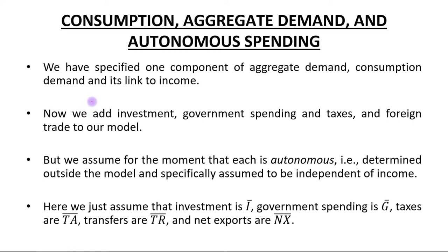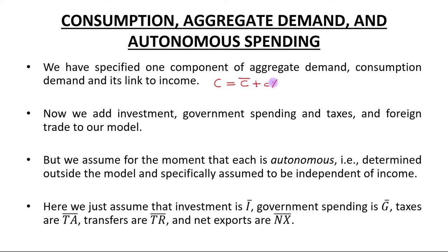Hello students. The next topic is consumption, aggregate demand, and autonomous spending. We have specified one component of aggregate demand: consumption demand and its link to income, that is, consumption equals autonomous consumption plus MPC times income.